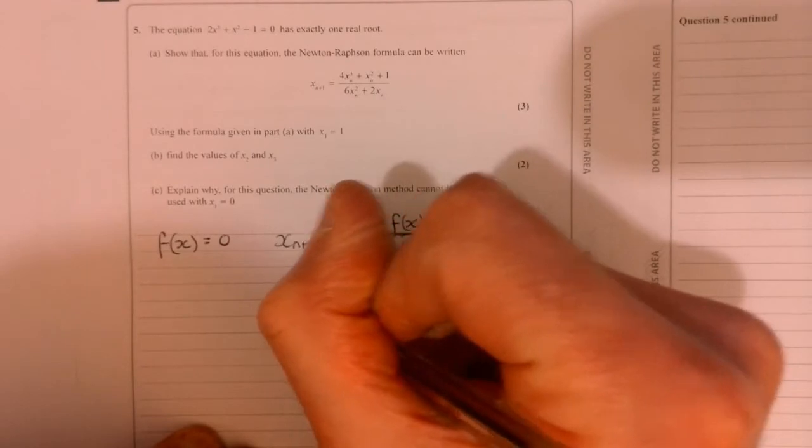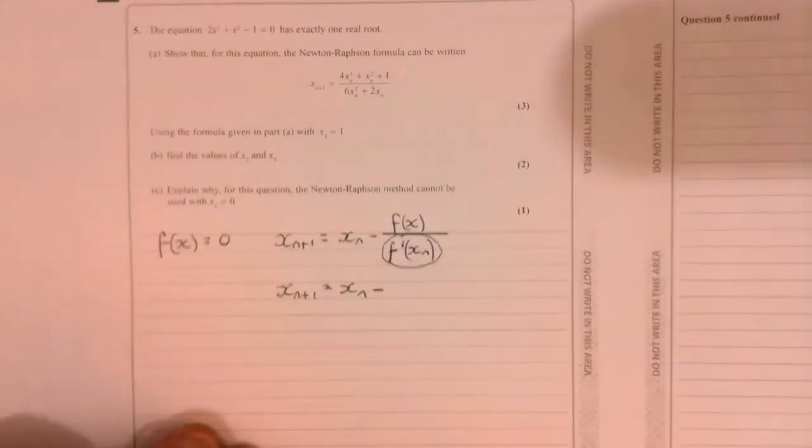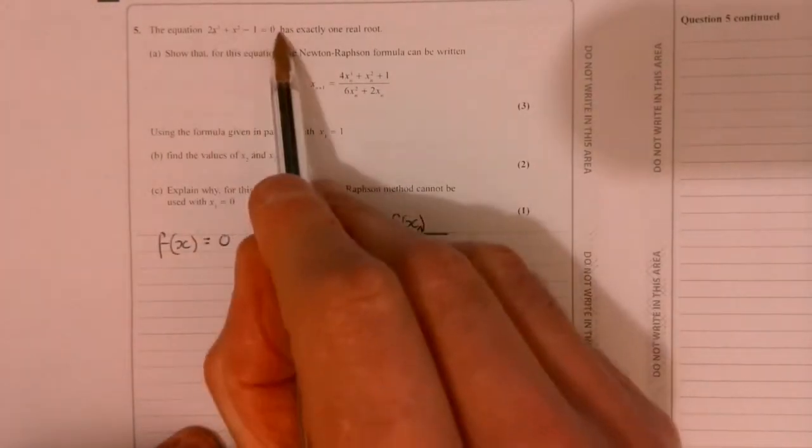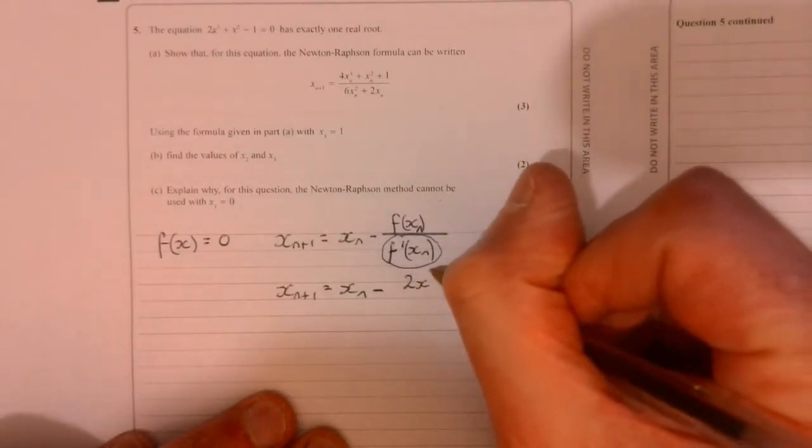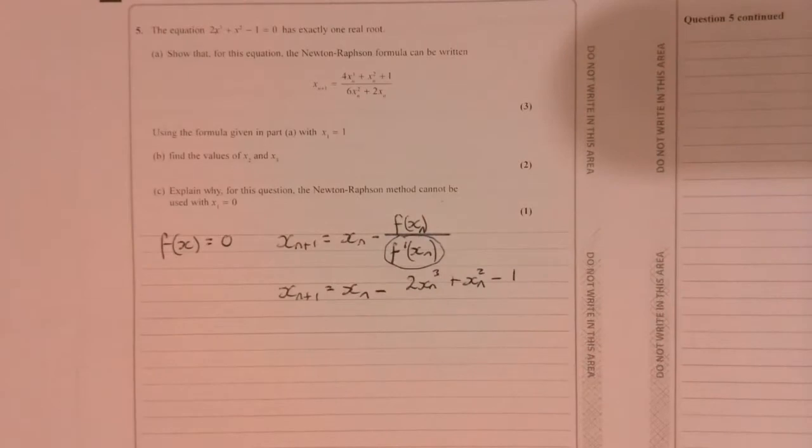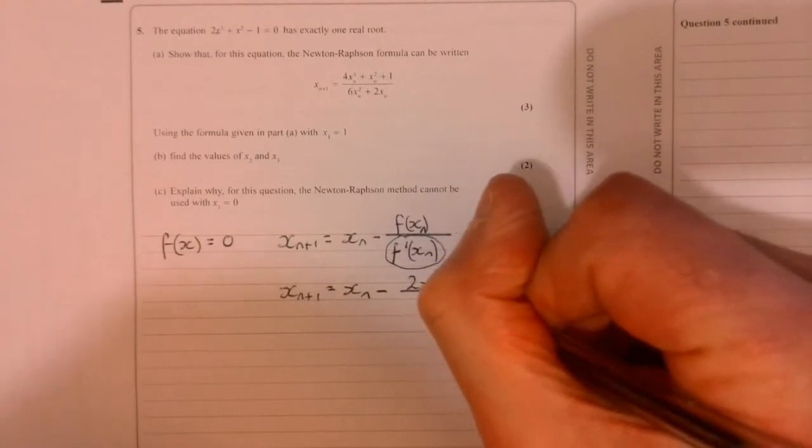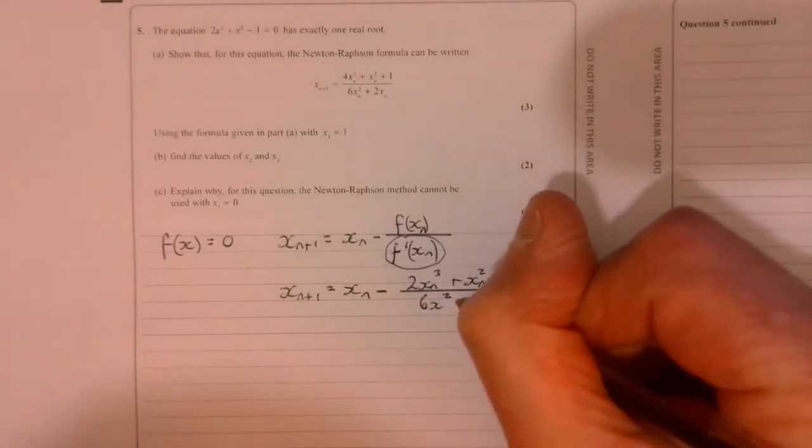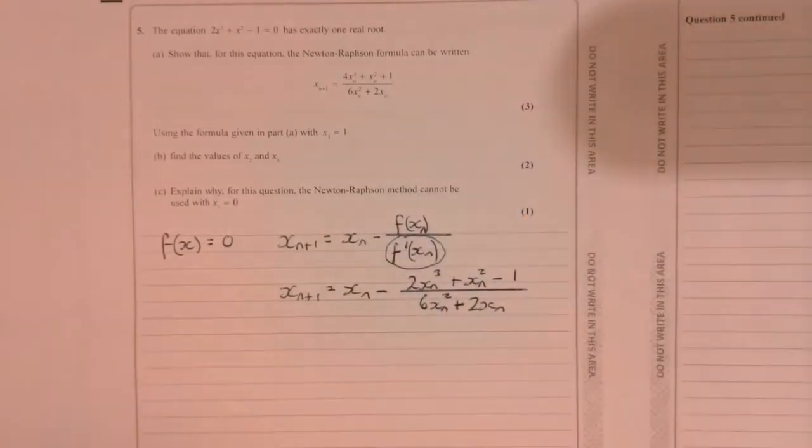So let's write this down. I've got x_{n+1} equals - I'm going to take away. So function of x, let's just write that down. And it's equal to 0, so it's all in the right form. So we've got 2x³ + x² - 1. I should really put the subscript n's in there as well. And all of that is quite simply over 6x² - where is this coming from? This is the derivative of this. And plus 2x. And remember, we should have those subscript n's in there.